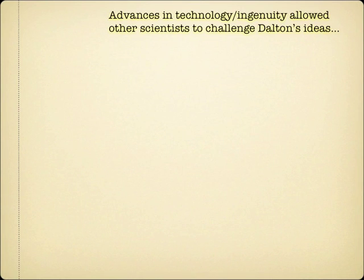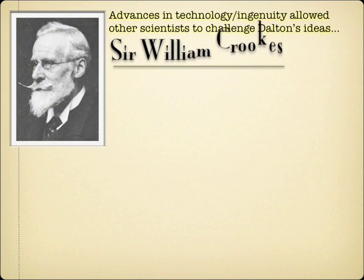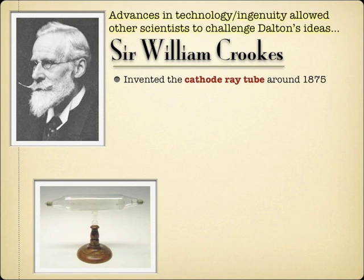Dalton's model of the atom would stay until technology came along that would advance people's understanding of atoms. Atoms are tricky to study, and so the trick was to find some kind of experiment or observation at the macro level of experience that would give us information about what's going on inside atoms, which obviously we could not observe directly. And so along came Sir William Crookes, and he created the cathode ray tube in the late 19th century.